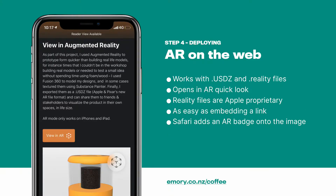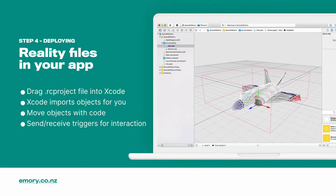To deploy the asset, you can deploy it on the web — I've got it at emery.co.nz/coffee. It works with both USDZ and reality file format, and opens in AR Quick Look. It's as easy as embedding a link or an image to a website — you just have to have the rel attribute set to AR. You can also embed reality files in your app by dragging them into your Xcode project. Xcode imports all the objects and assets for you as lines of code, and then you can move objects with code, change text dynamically, and send and receive triggers for interaction — say when two objects collide, you can have the phone vibrate or pull up a modal.